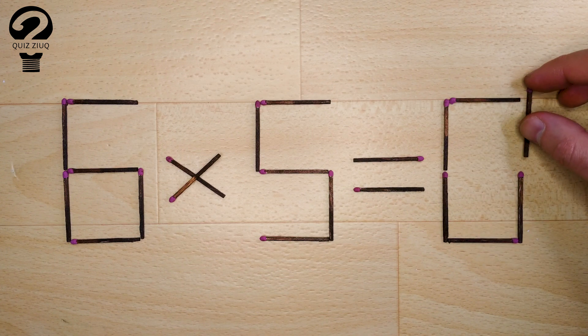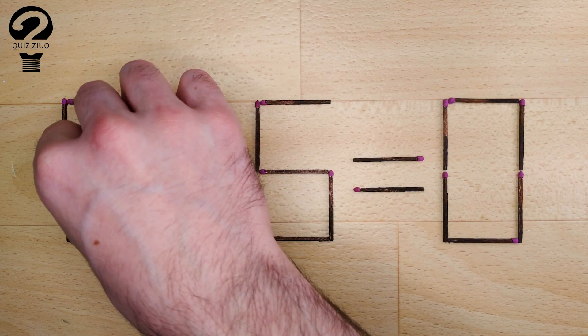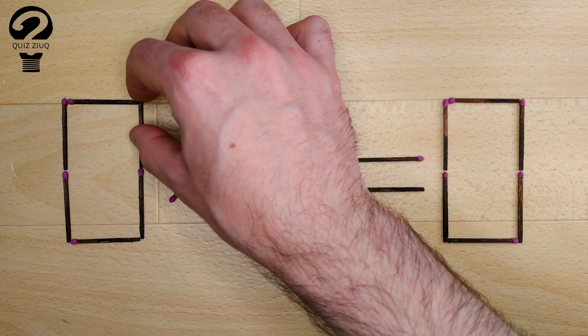And now, when we check, zero times five equals zero. Zero equals zero. Our equation is correct. The puzzle is solved.